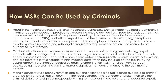Criminals obtain low-cost workers' compensation insurance by grossly deflating payroll accounts. After securing certificates of insurance, they rent those certificates to other individuals and businesses. Because the policies are obtained fraudulently, employees are not covered and are left vulnerable to high medical costs from on-the-job injuries. The payroll amounts are concealed by cashing checks at an MSB that circumvents proper bookkeeping. Money launderers also use money remitters and currency exchanges to make funds available to criminal organizations in a destination country in local currency, with brokers selling criminal dollars to foreign businesses for legitimate purchases.